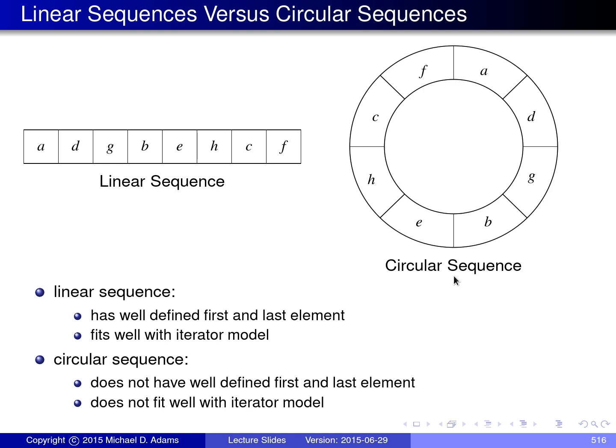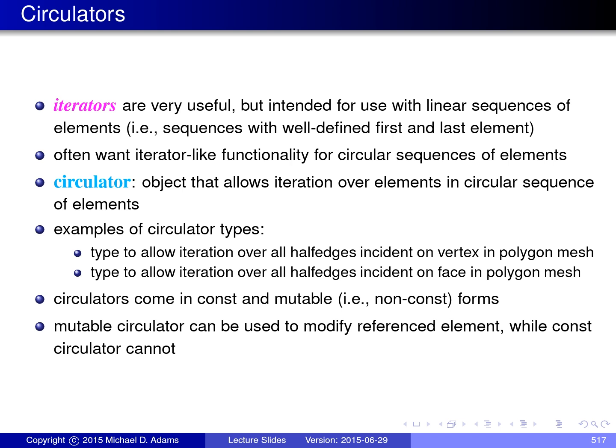This leads to the notion of what's called a circulator in CGAL, which I'm going to discuss next. As mentioned previously, iterators are very useful when working with linear sequences of elements, in other words, sequences with a well-defined first element and last element. Often in geometric algorithms, however, circular sequences of elements very naturally arise. And iterators don't fit very well with circular sequences of elements because of the fact that a circular sequence has no well-defined first element and no well-defined last element. So, for this reason, CGAL introduces a notion of what's called a circulator. And a circulator is an object that allows iteration over elements in a circular sequence of elements.